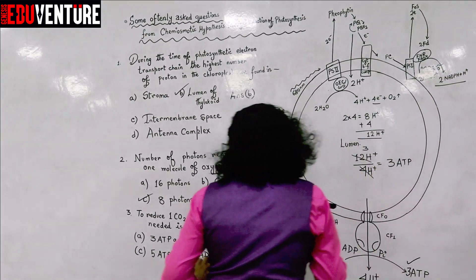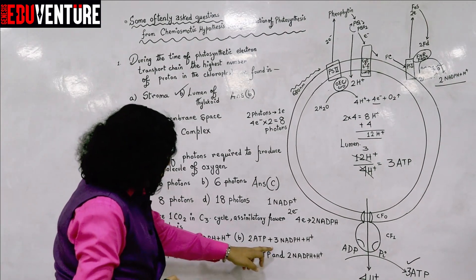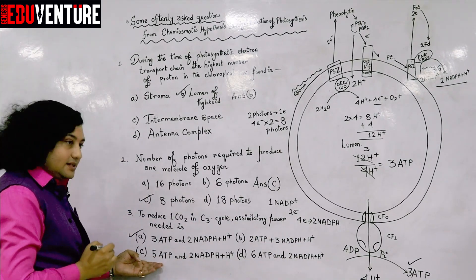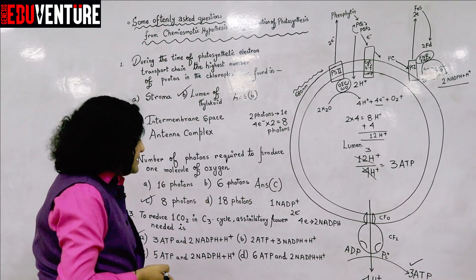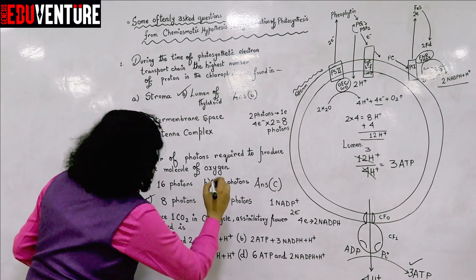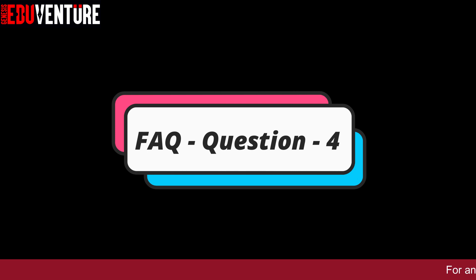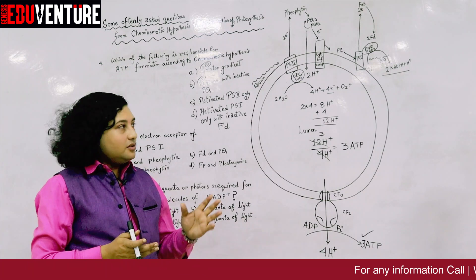The answer is confirmed: 3 ATP and 2 NADPH. Option B (2 ATP + 3 NADPH) is incorrect, option C (5 ATP) is incorrect, and option D (6 ATP) is also incorrect. The correct answer is option A. Moving on to question 4.